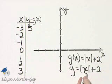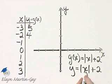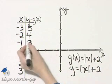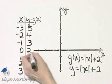If x is negative 2, the absolute value of negative 2 is 2, and 2 plus 2 is 4. The absolute value of negative 1 is 1, and 1 plus 2 is 3. Absolute value of 0 is 0, plus 2 is 2.